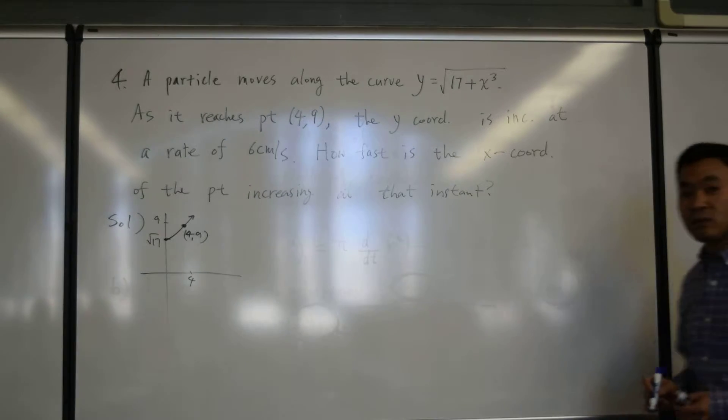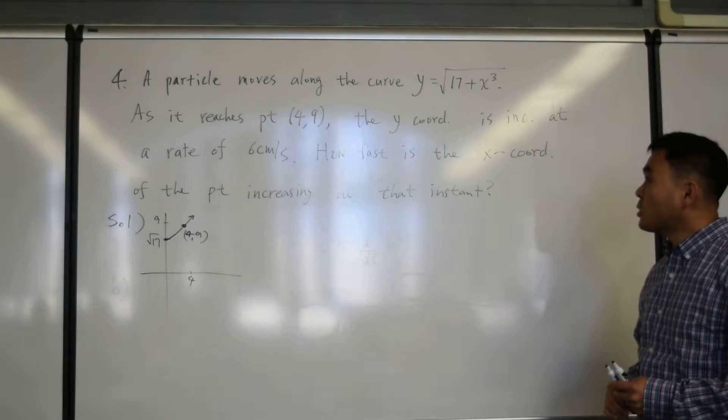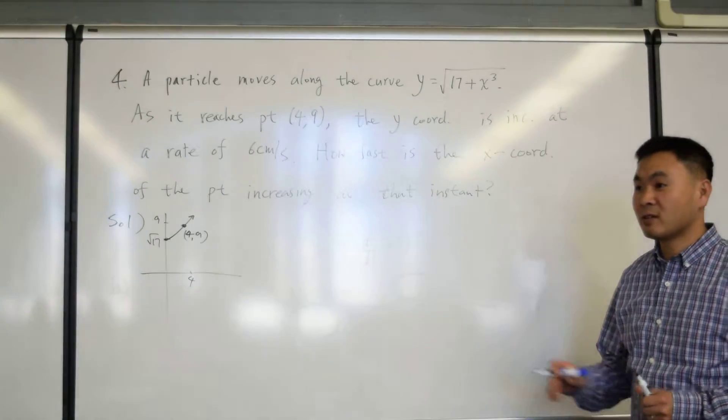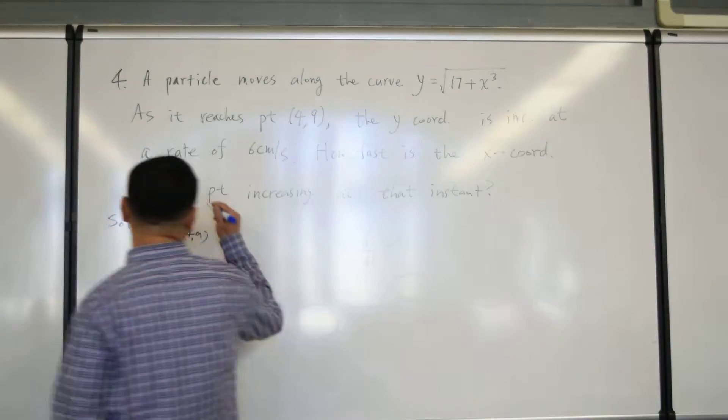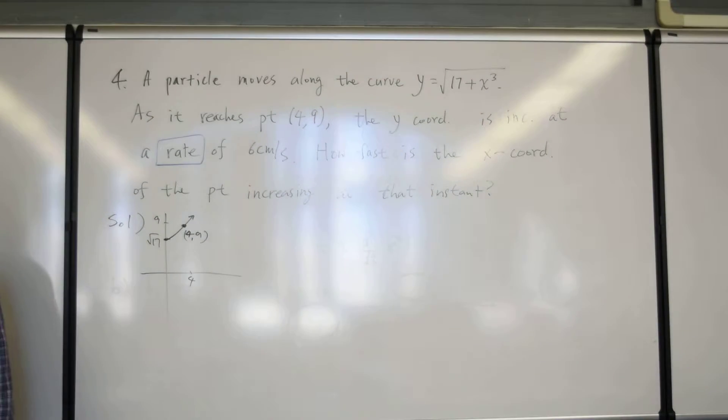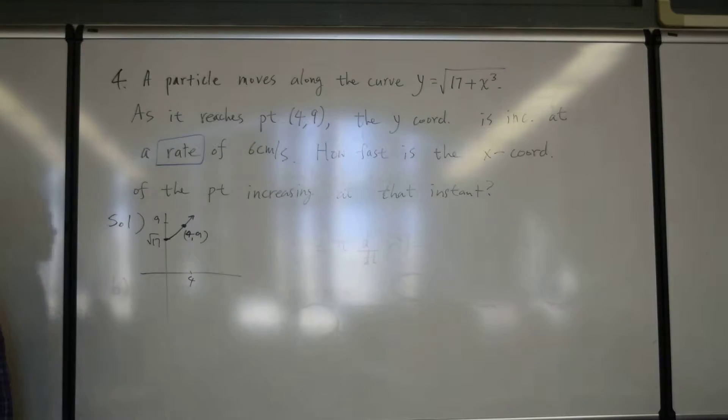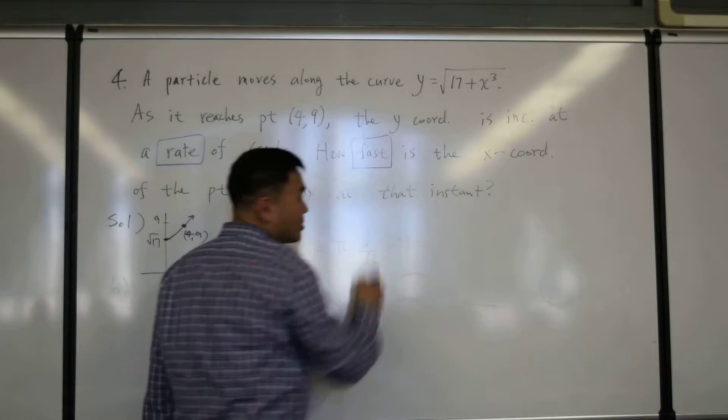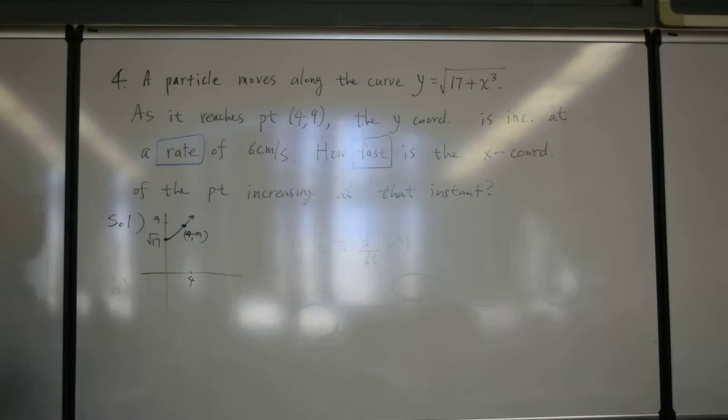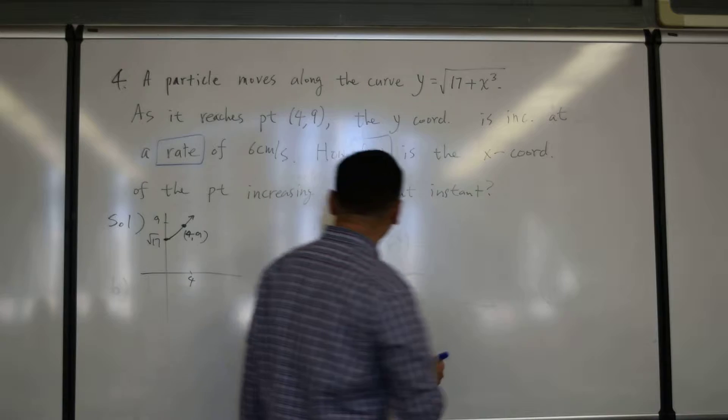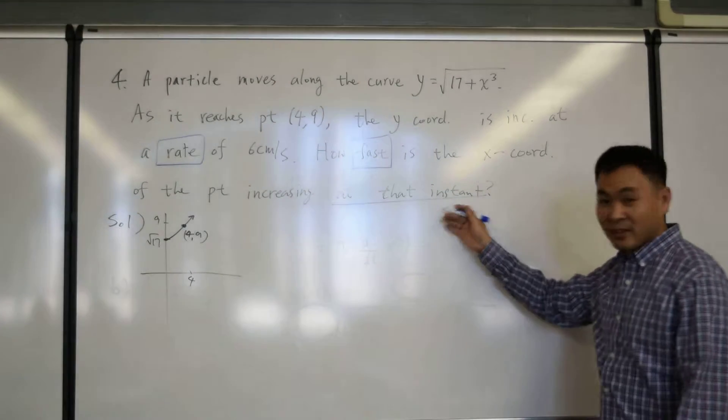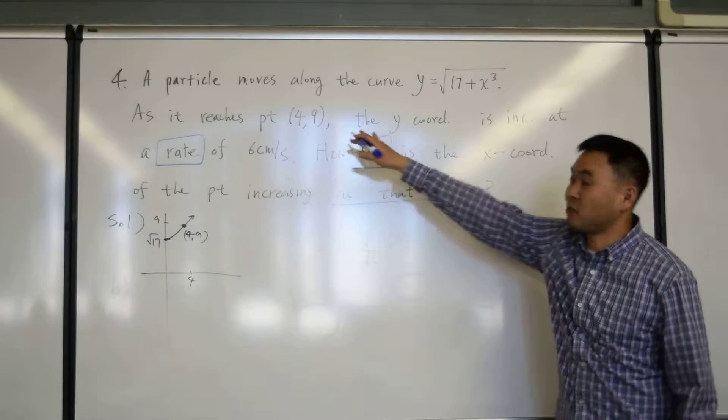So when you read this question, what words should you focus on first? I talked about this word, rate. What else? Fast. Because these mean what? Derivatives. And then, this question doesn't happen when, but at that instant. So that's like when. When it's at this point, 4,9.